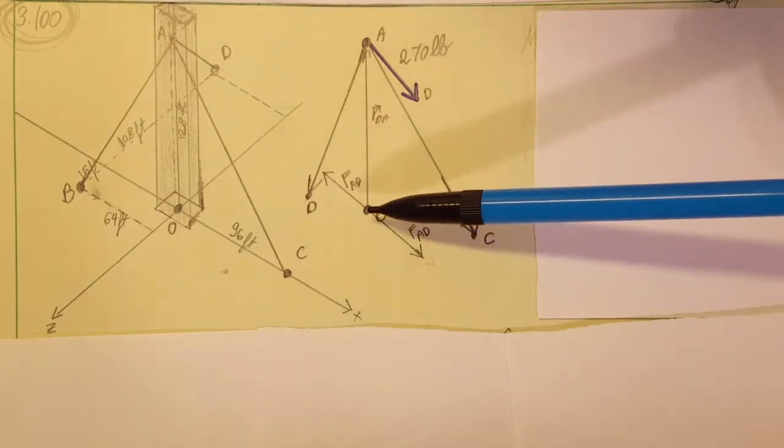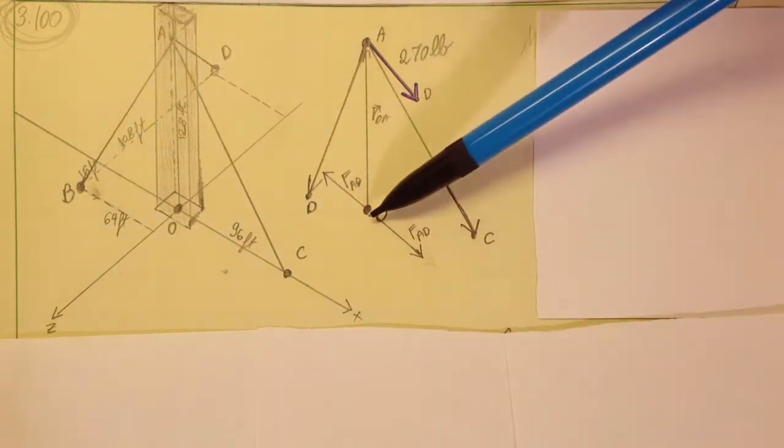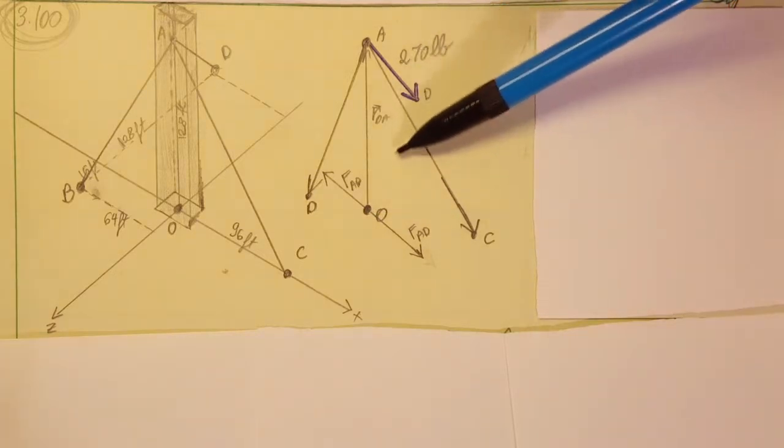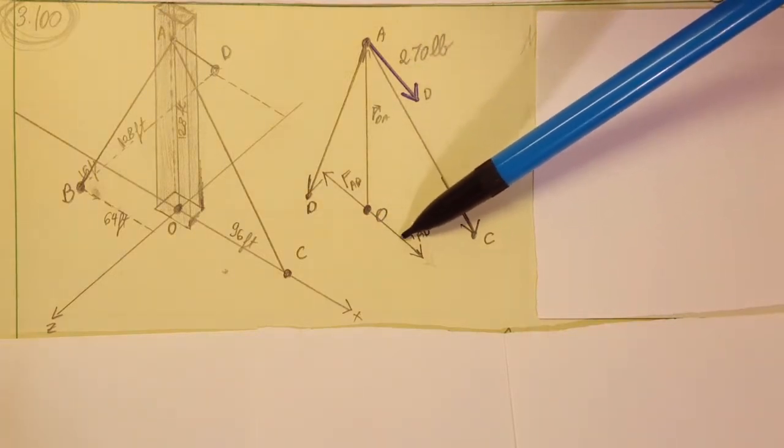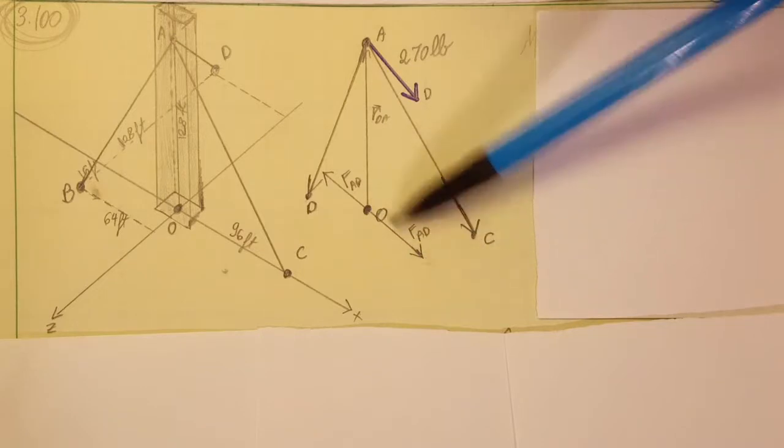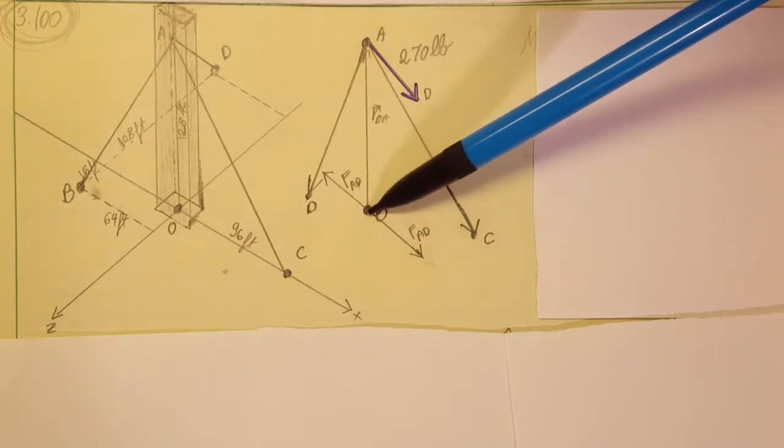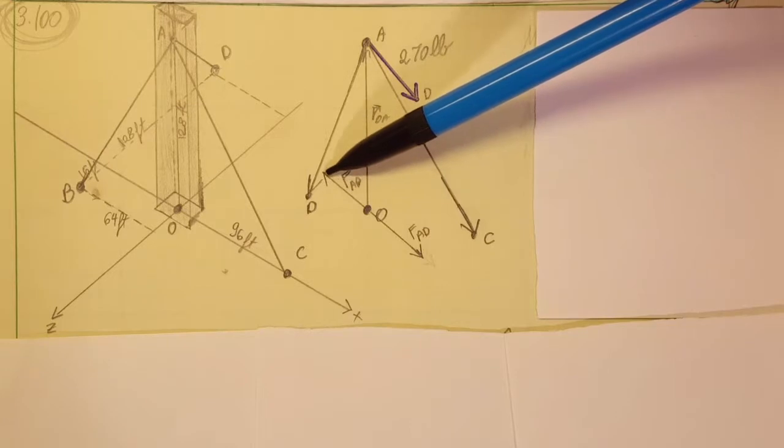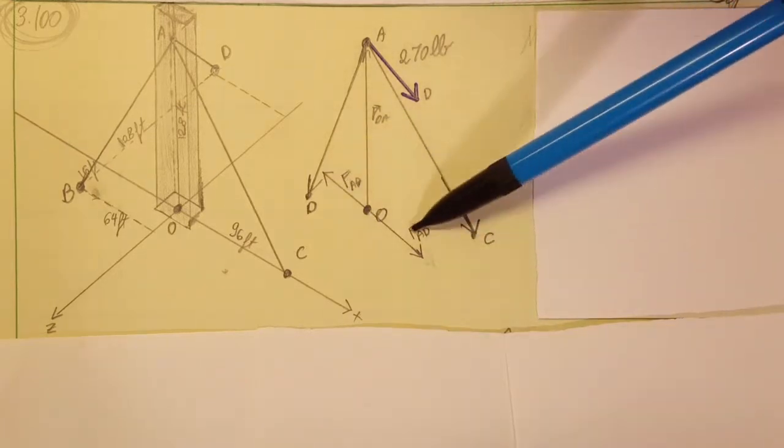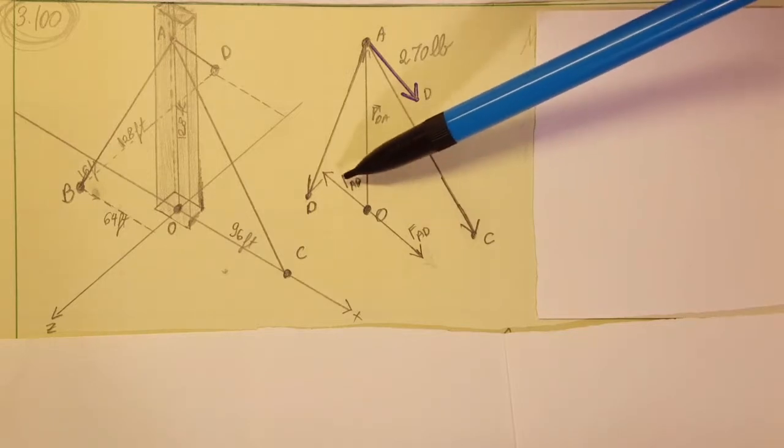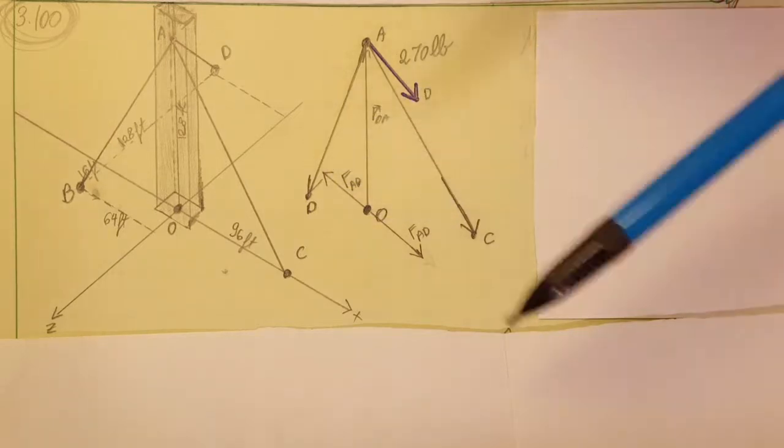But we're gonna also draw it in the opposite direction. So this is F_AD, this is negative F_AD in the other direction. So basically nothing changes here. The two forces would cancel each other out and we're back to the same system we had here.